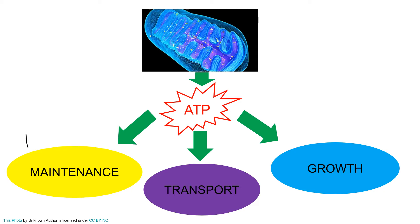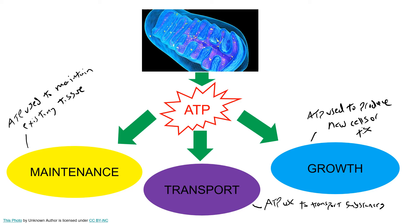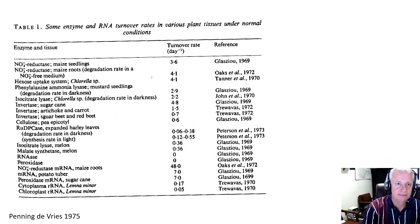Maintenance respiration is ATP used to maintain existing cells or existing tissue. Transport respiration is ATP used to transport substances — very often across a membrane. And growth respiration is ATP used to produce new cells or tissues. Those are fairly self-explanatory.